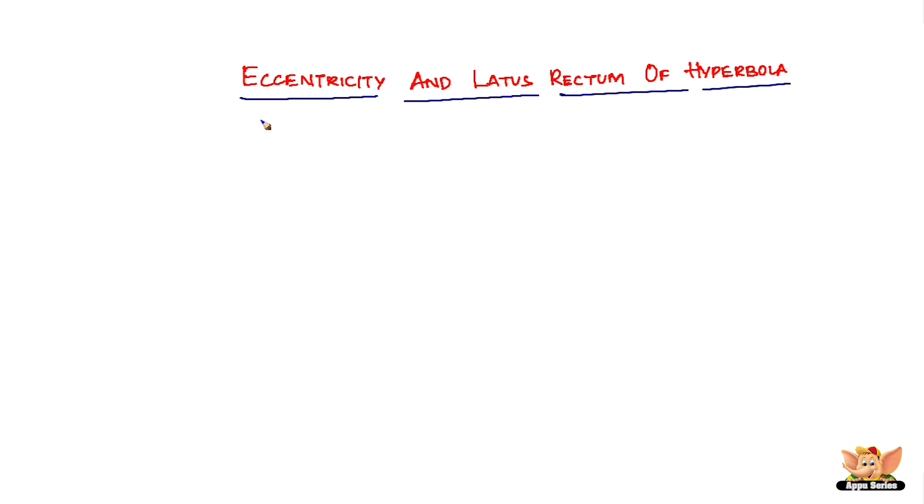First up, let's look into what is the formula of eccentricity of a hyperbola. Eccentricity of hyperbola is given by E equals C divided by A.